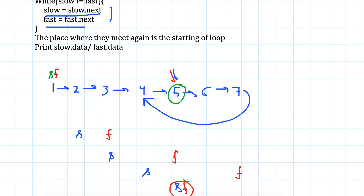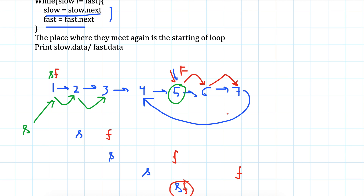Now I move the slow pointer back to the beginning — slow is reset to head and fast remains at the meeting point. We start incrementing both by one step: fast goes to 6, slow moves to 2. Then fast goes to 7, slow moves to 3. Then fast goes to 4, slow moves to 4. They meet again here at node 4, and this was the beginning of the loop.